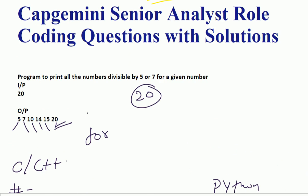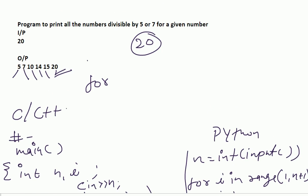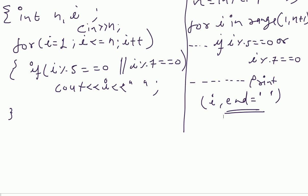In these conditions, you need to print what? Print i comma and you need to print and, because we need to print the space separated digits. That's why I have used and here. So this is the code in Python and C++ for this question: program to print all the numbers divisible by five and seven for a given number.